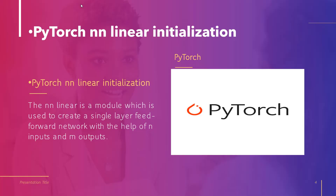Now move forward and discuss about PyTorch nn.Linear Initialization. As we know, nn.Linear is a module which is used to create a single layer feed forward network with n inputs and m outputs. PyTorch nn.Linear Initialization allows us to also create the feed forward network with the help of the inputs and outputs. Let us understand the concept with the help of an example to clear our doubt.